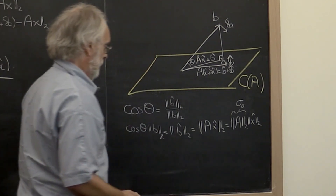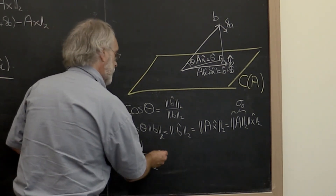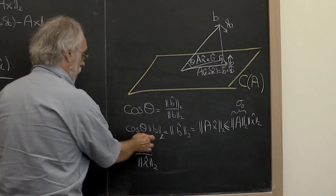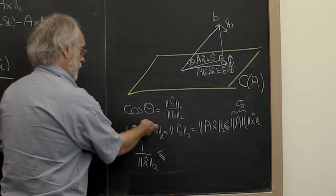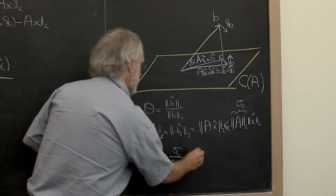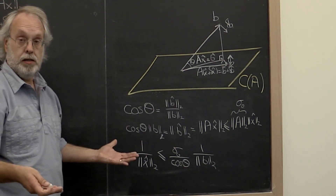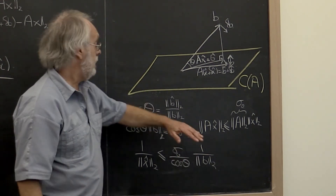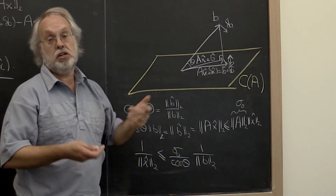Manipulating this a little bit, we get that 1 divided by the 2-norm of x-hat is less than or equal to sigma_0 divided by the cosine of theta times 1 over the 2-norm of b. When we just look at solving a linear system, that cosine does not come into play — because the column space of A is the entire space, and therefore the angle between any vector b and the entire space is zero, since that vector is in that space.